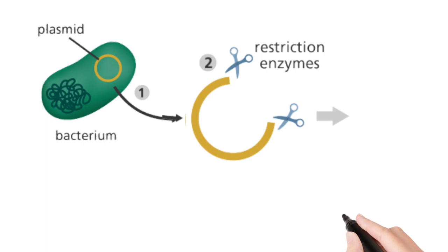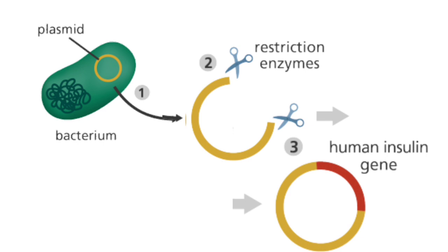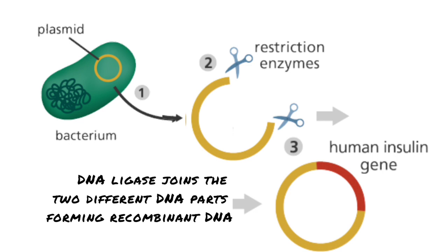At second step, restriction enzyme cuts the plasmid at a particular recognition site which forms some sticky ends. The same restriction enzyme cuts our gene of interest, in this case the human insulin gene, and DNA ligase joins the two different DNA parts forming recombinant DNA.